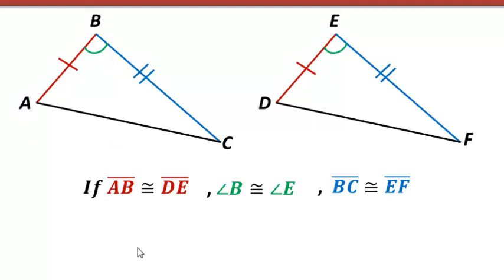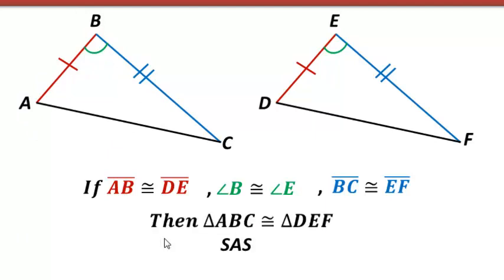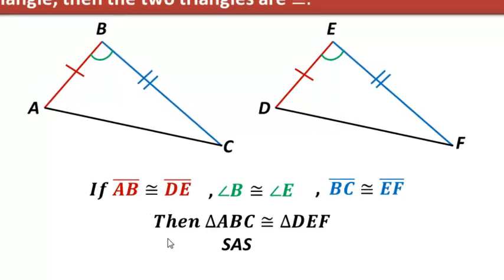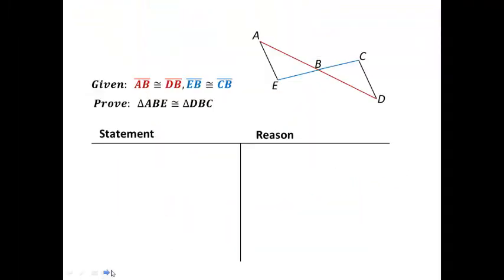Now I have enough information, and I would say that triangle ABC is congruent to triangle DEF using the side-angle-side postulate.